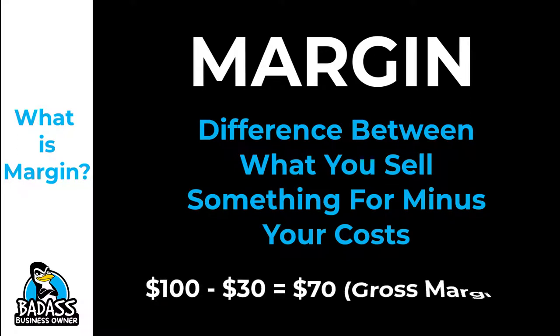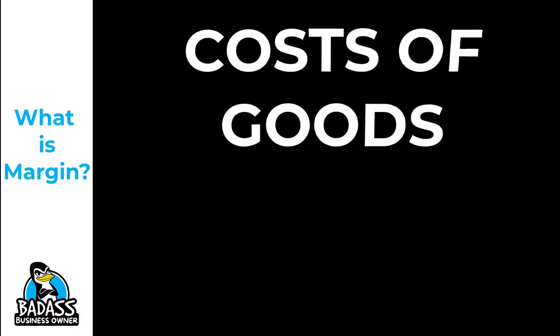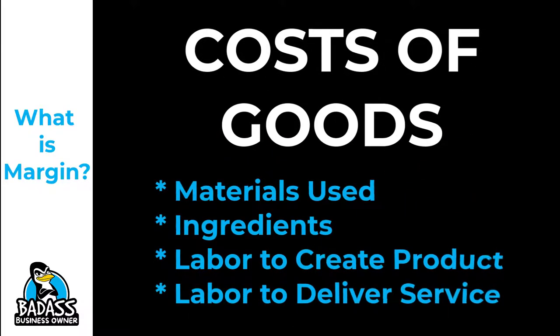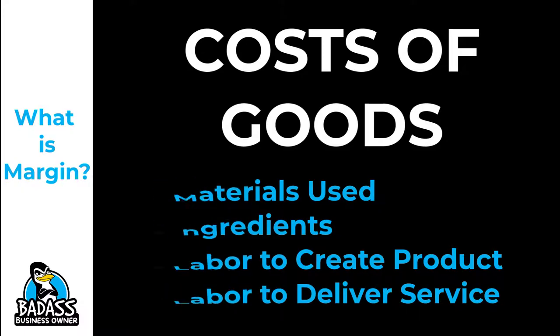Typically what we're looking at is what's called the gross margin, and that's going to be your sales minus your cost of goods. Keep in mind, your cost of goods includes any materials or products used in creating the product or service, and this includes labor hours — if you need a person to assemble or create the product, those hours are included in your cost of goods, as are labor hours for any service that you provide.